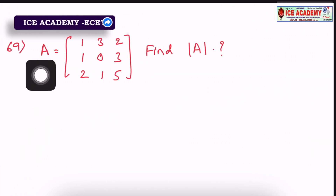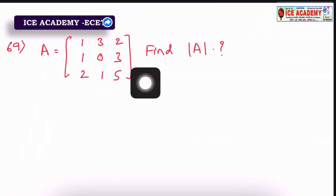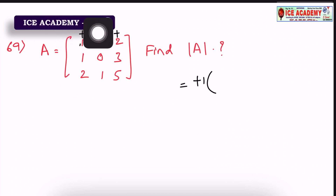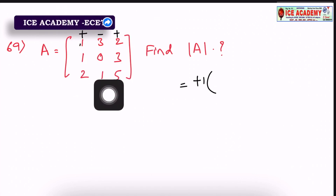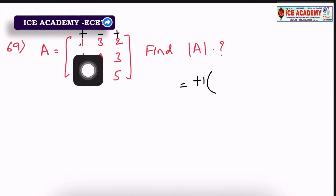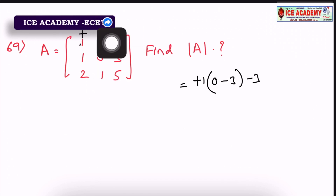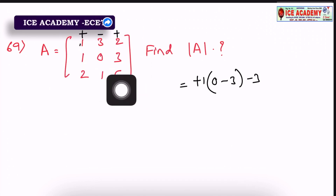Next question, 69th question. If A is equal to [1, 3, 2; 1, 0, 3; 2, 1, 5], find the determinant. This is a 3×3 matrix. In the traditional model, we multiply and remove elements row by row. We take the first row elements and multiply by their minors: AD minus BC for each 2×2 sub-matrix. The remaining columns 0 to 15, then we add AD minus BC. AD means 5×0, 0 and minus 3, 1×3.